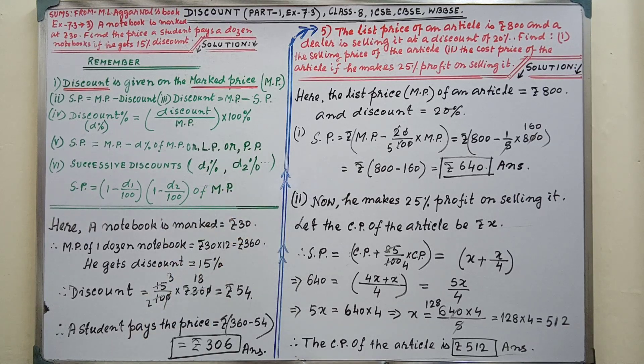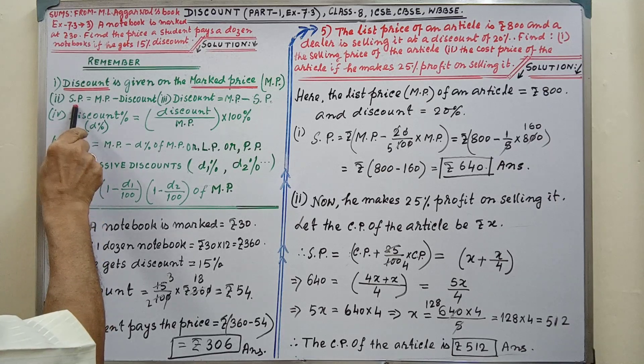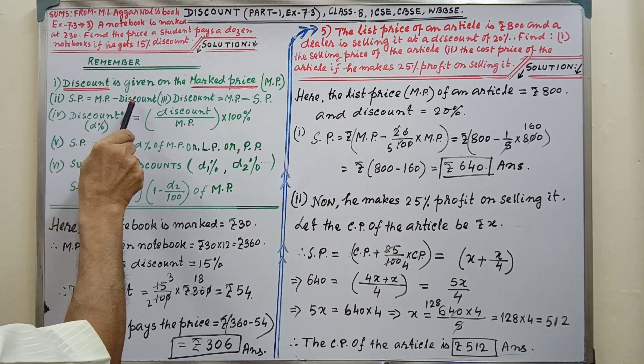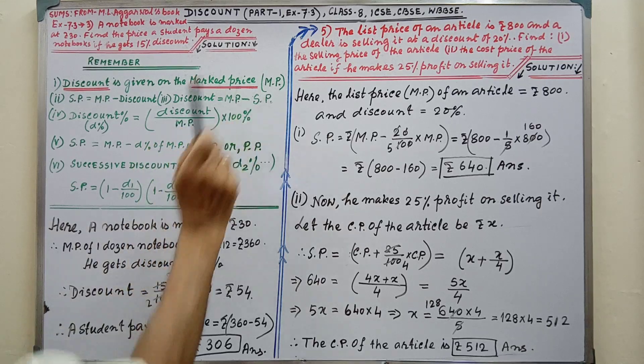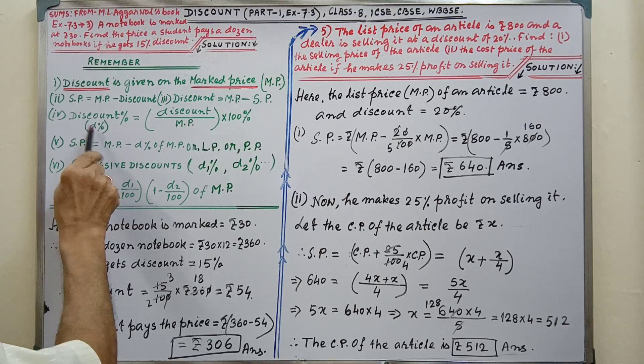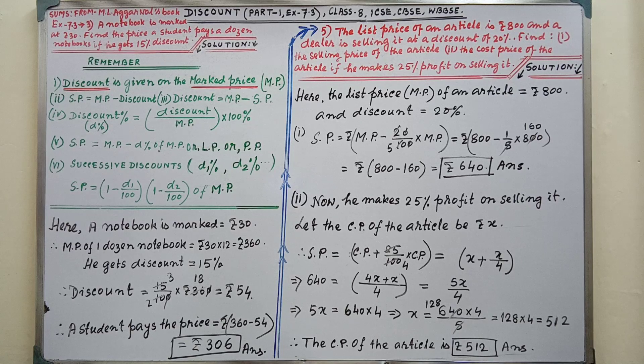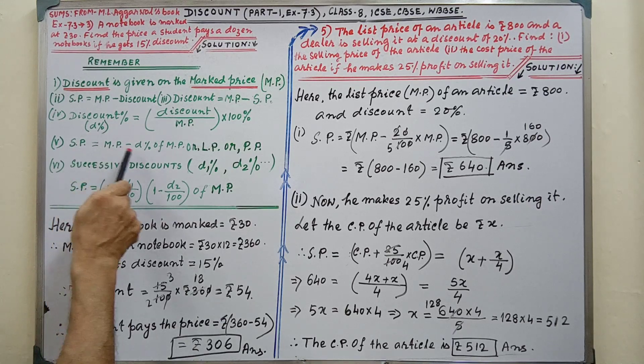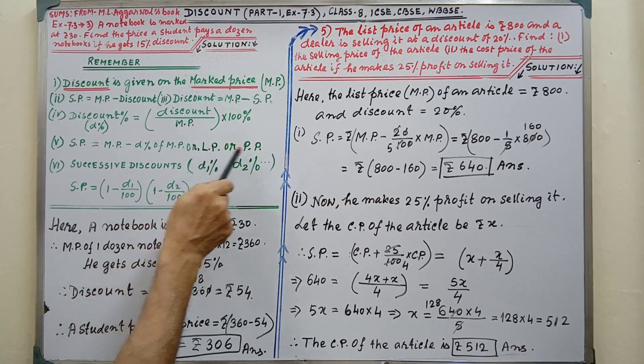Printed price. You have to remember PP. SP = MP - discount, and discount = marked price - SP. Discount percent denoted by D%. Discount = (D/100) × MP. SP = MP - discount of MP or LP or PP.